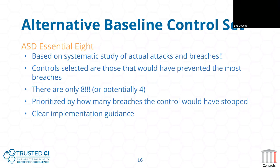The alternative baseline control set from the Australian Signals Directorate was actually based on a study of attacks and breaches. The controls are selected to say: if people did these things, it would have prevented most breaches. There are only eight — it actually started out as four and was expanded. They're prioritized by how many breaches the control would have stopped, and there's clear implementation guidance on those.